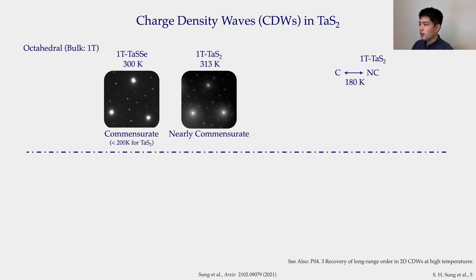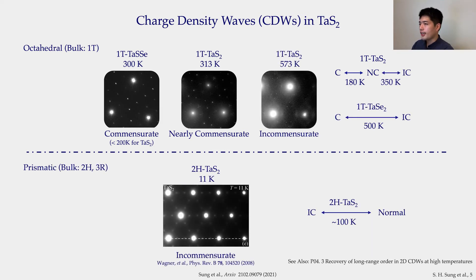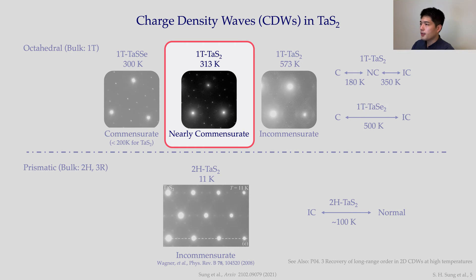TaS₂ features many different CDW phases. For this talk, I would like you to focus on the commensurate and nearly commensurate phases of octahedrally coordinated TaS₂. In the commensurate phase, the CDWs are locked into the crystal. In the nearly commensurate phase, long-range order is disrupted by discommensuration. The focus of this talk is what happens at room temperature: octahedral TaS₂ is in the disordered nearly commensurate phase, while the prismatic phase is a normal metal.